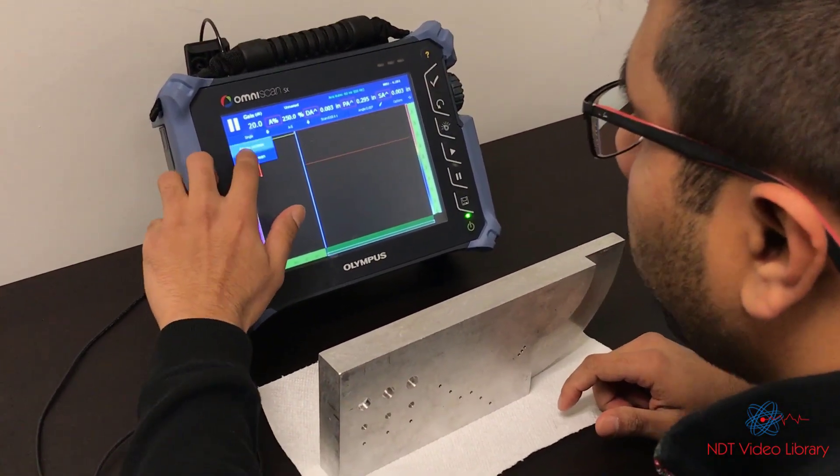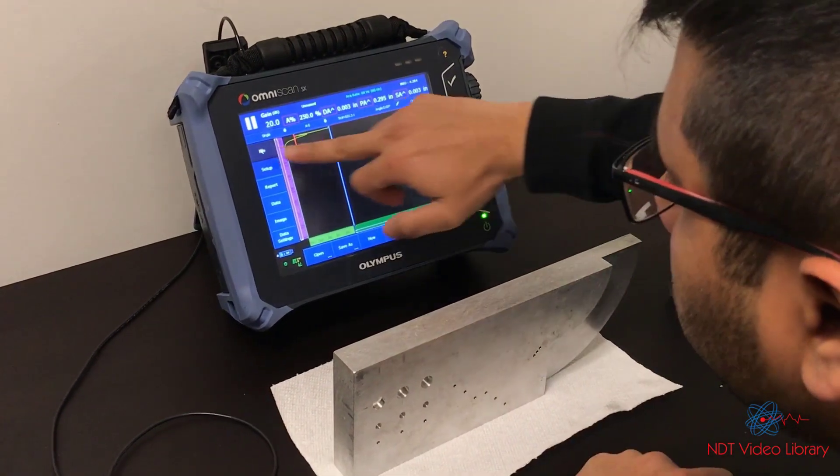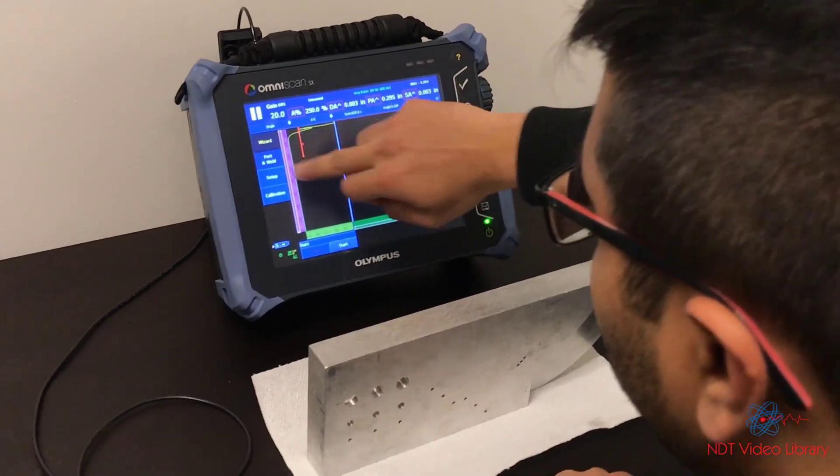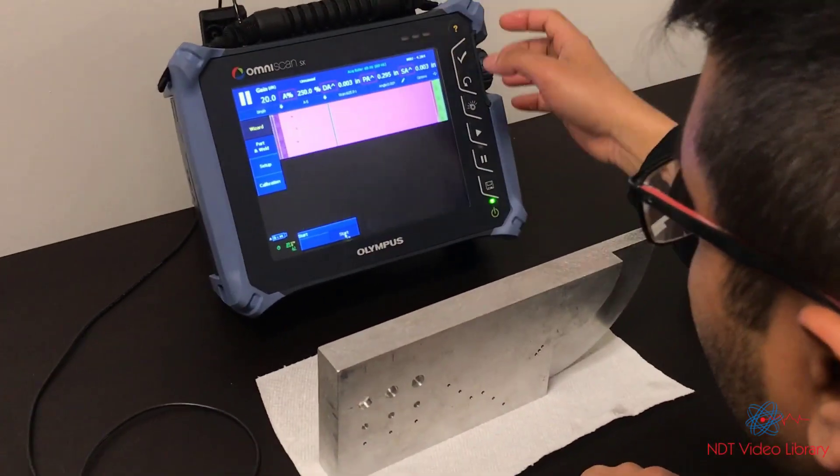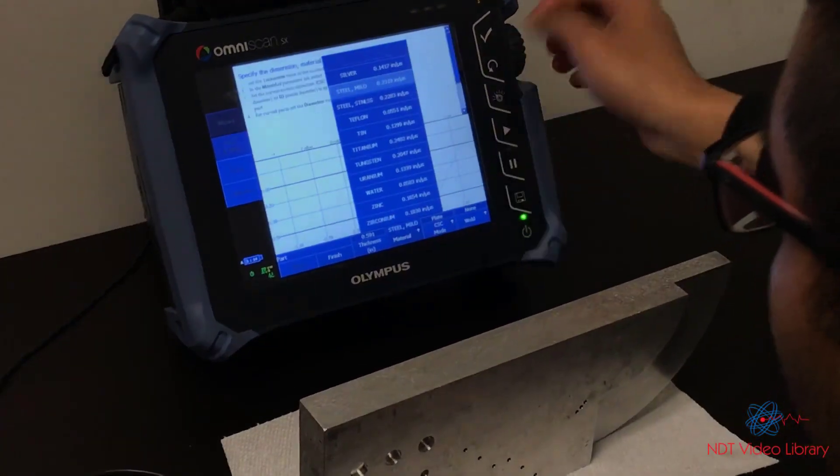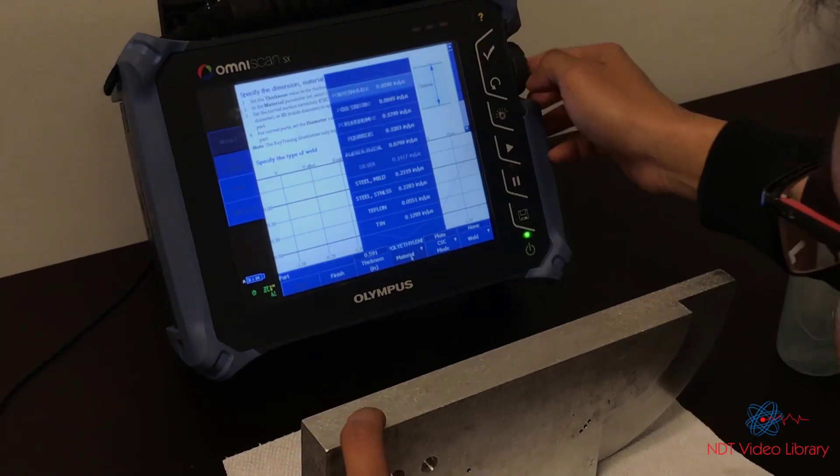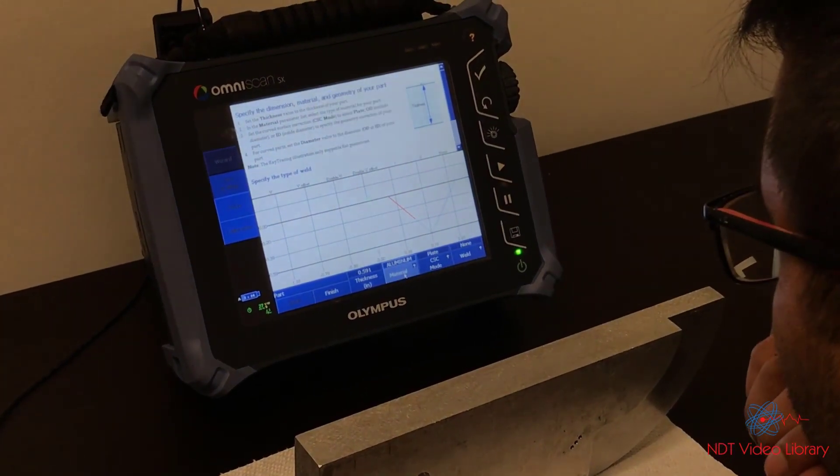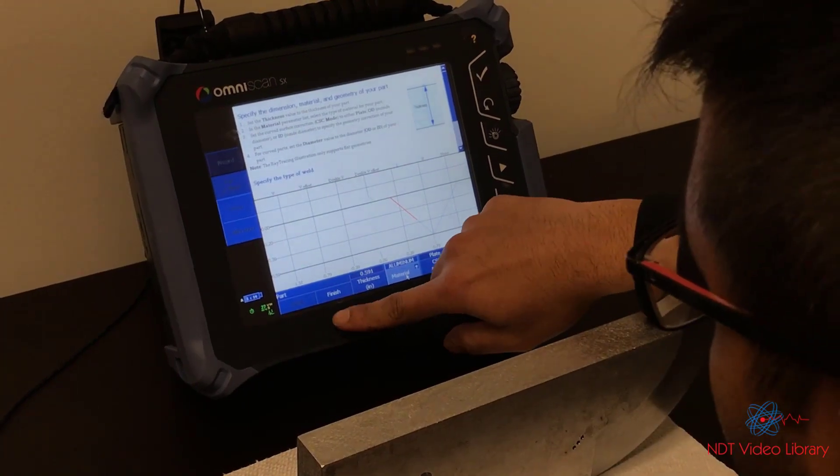I'm going to go on menu screen, click wizard, part and weld. We choose the material over here to aluminum and finish.